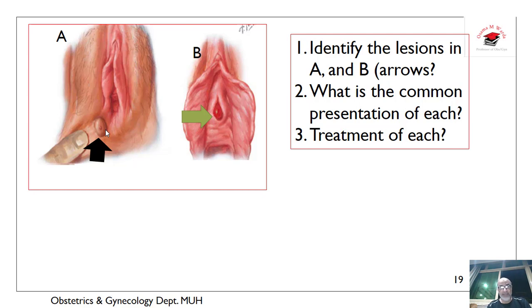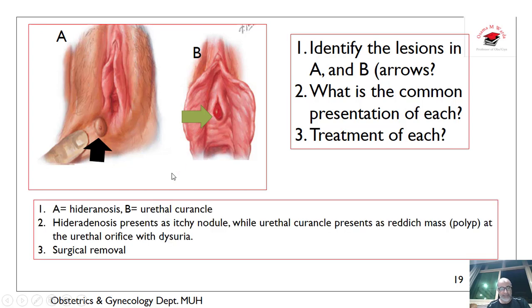That was lymphogranuloma venereum, which mainly affects the lymphatics of the vulva. Both are sexually transmitted diseases and both are common in some African equatorial countries. What about this region? This is an inclusion dermoid and this is a urethral caruncle. This is hidradenitis and this is a urethral caruncle. Urethral caruncle presents as a reddish mass or polyp at the urethral orifice with dyspareunia; the management of choice is surgical removal.